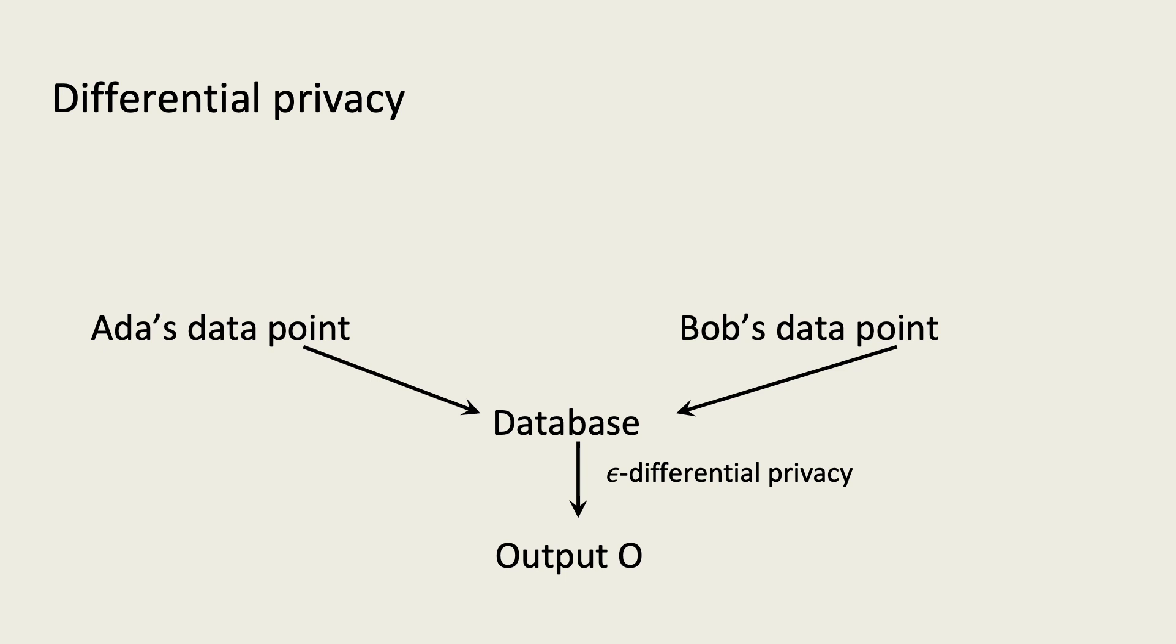Suppose we are interested in figuring out how common a genetic mutation is by collecting medical information from people. Here for simplicity, I show just two potential survey participants, Ada and Bob. To get them to honestly reply to our survey, we guarantee that the survey's output will be differentially private. Differential privacy ensures that if Ada drops out of the survey, the output won't change much. And the same holds true if Bob drops out of the survey.